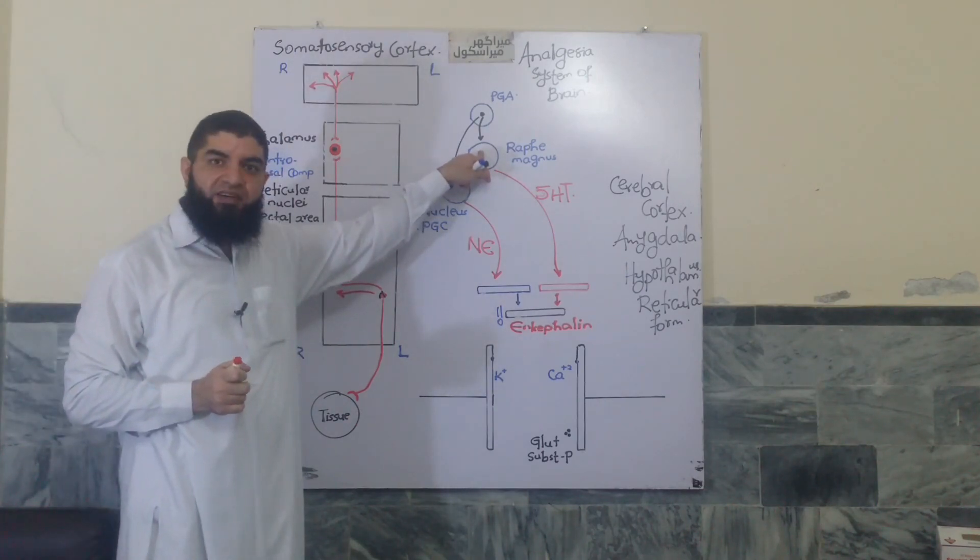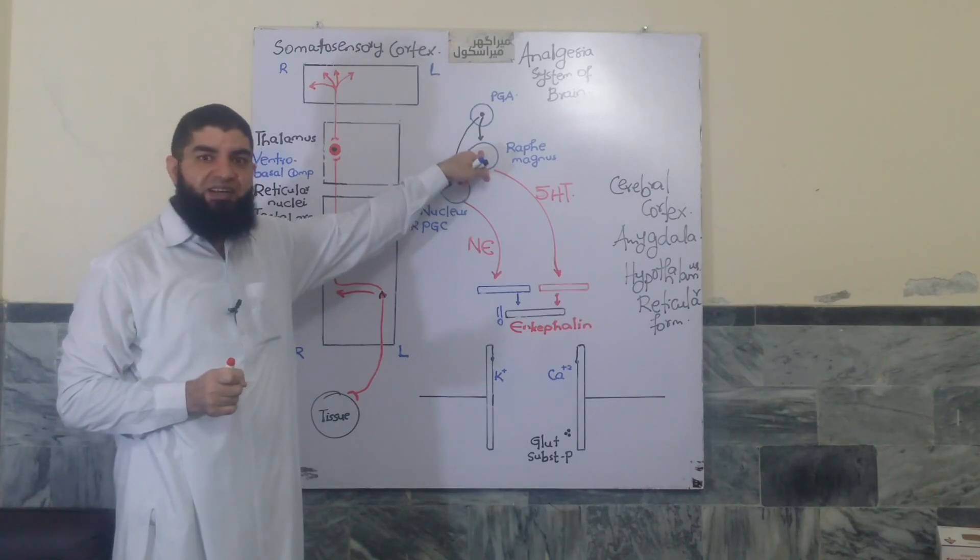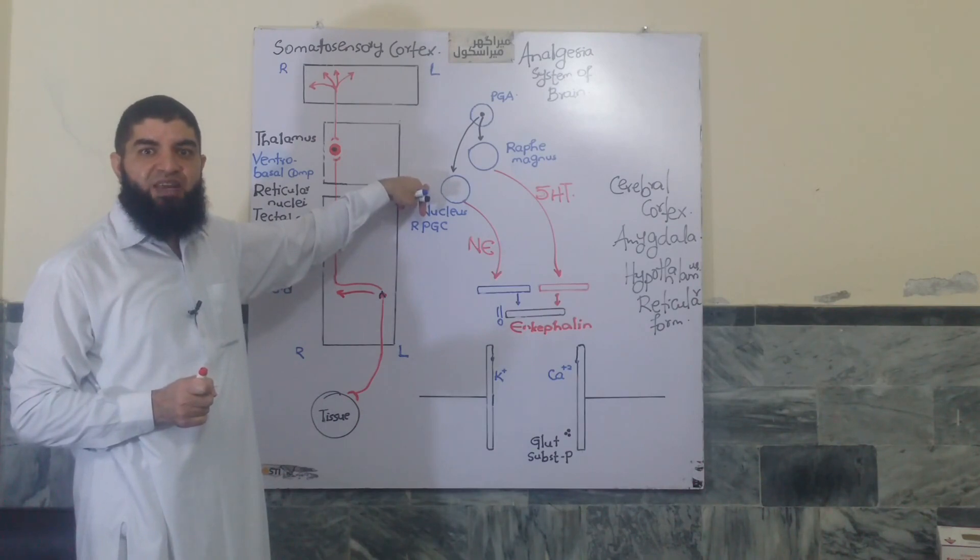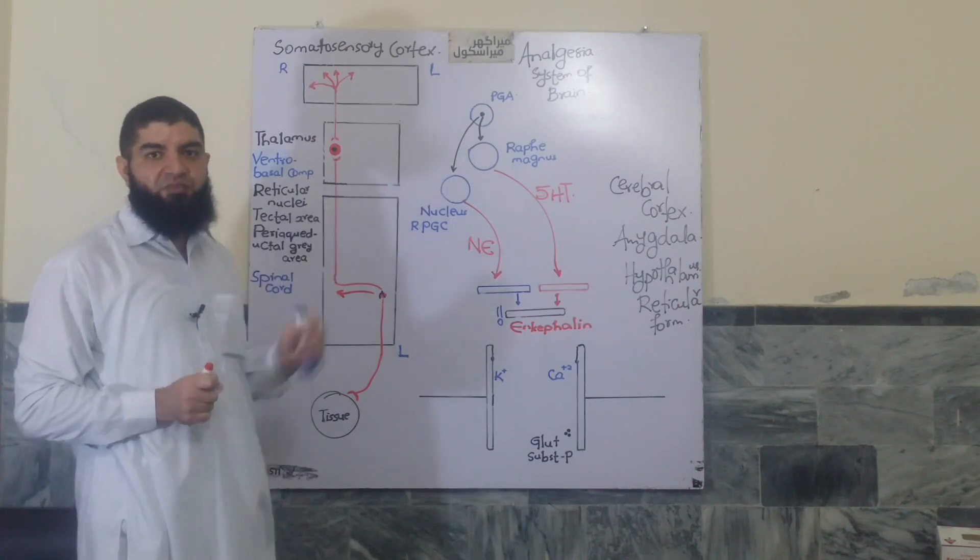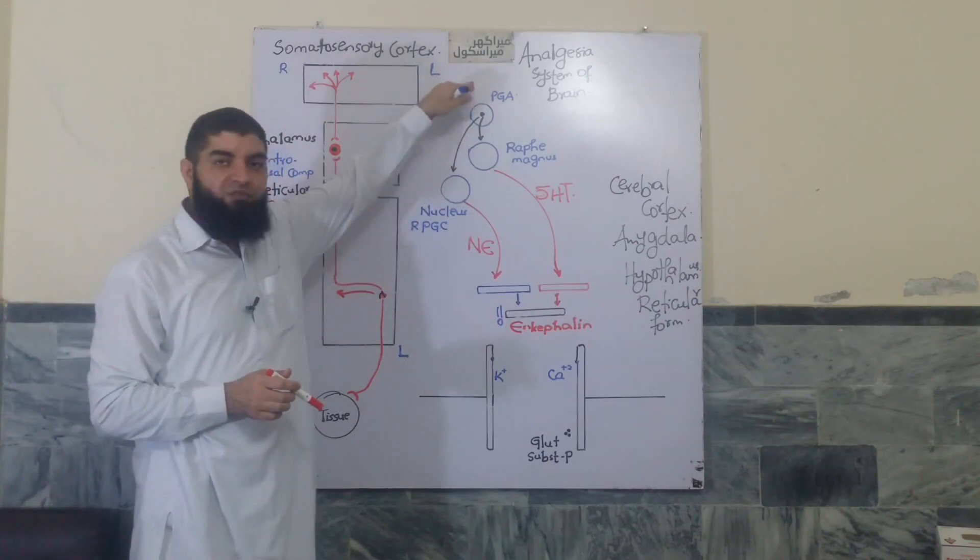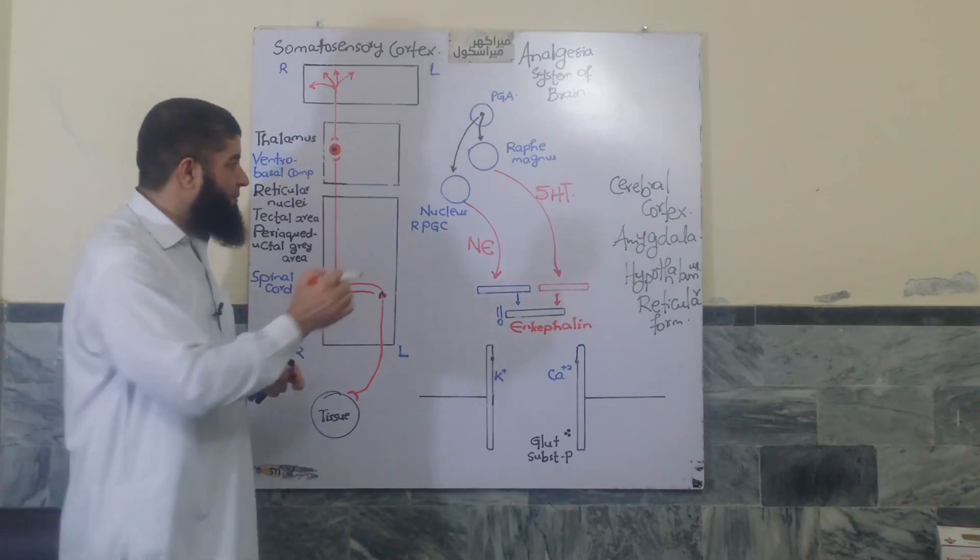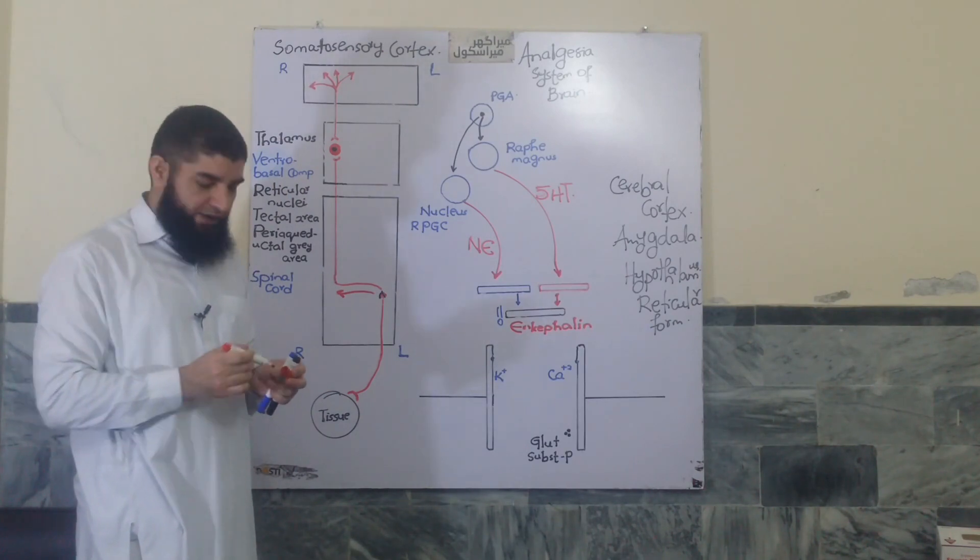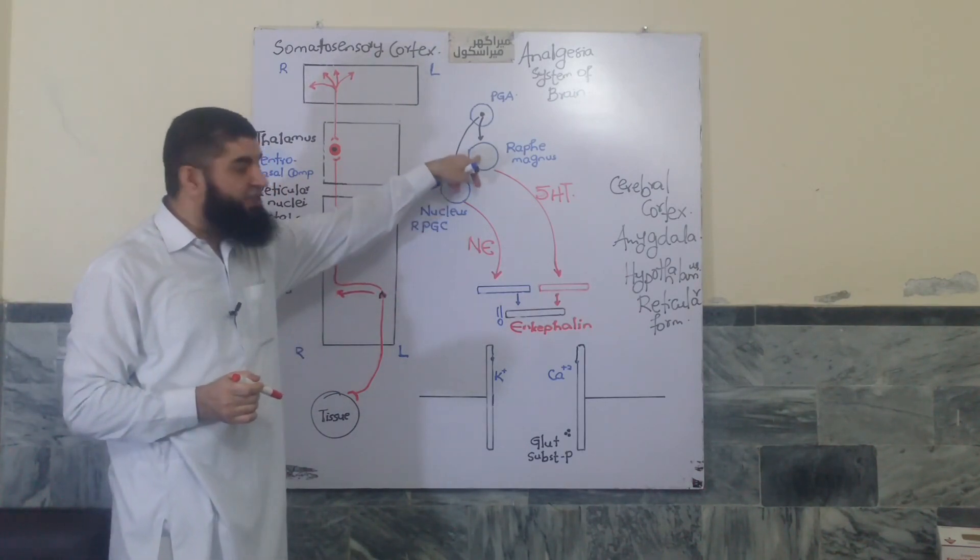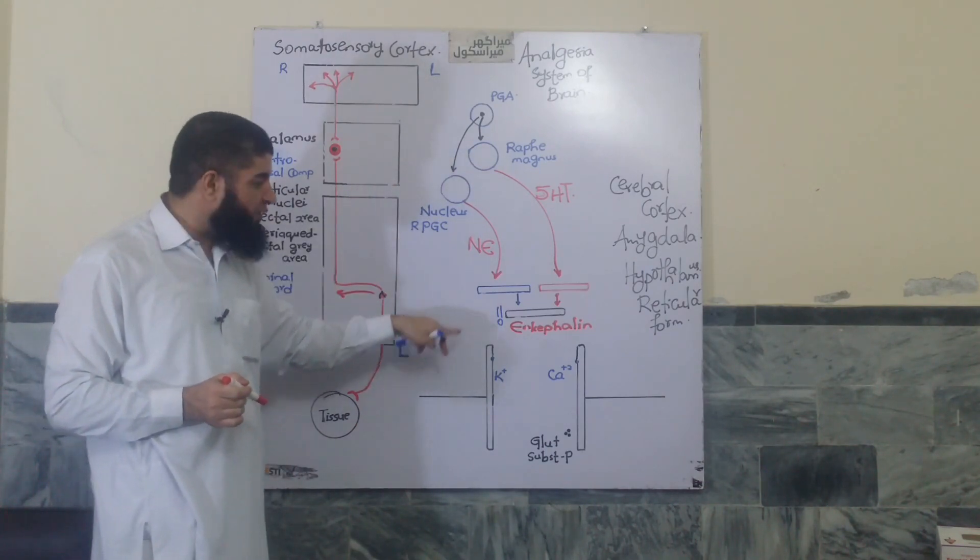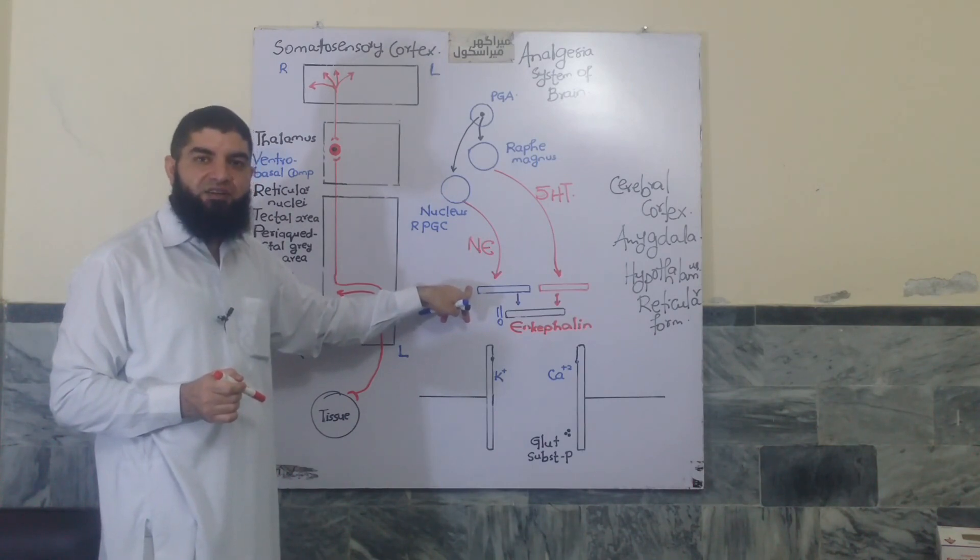the nucleus raphe magnus, in the lower pons and upper medulla, and we have one more nucleus, the nucleus reticularis paragigantocellularis, in the lateral part of the medulla. Activation of these areas by the periaqueductal gray area causes impulses that descend all the way down into the spinal cord. And here, the neurons arising from the nucleus raphe magnus, and this one with a difficult name, descend all the way down to synapse on neurons in the gray matter of spinal cord. We call it dorsal inhibitory complex.